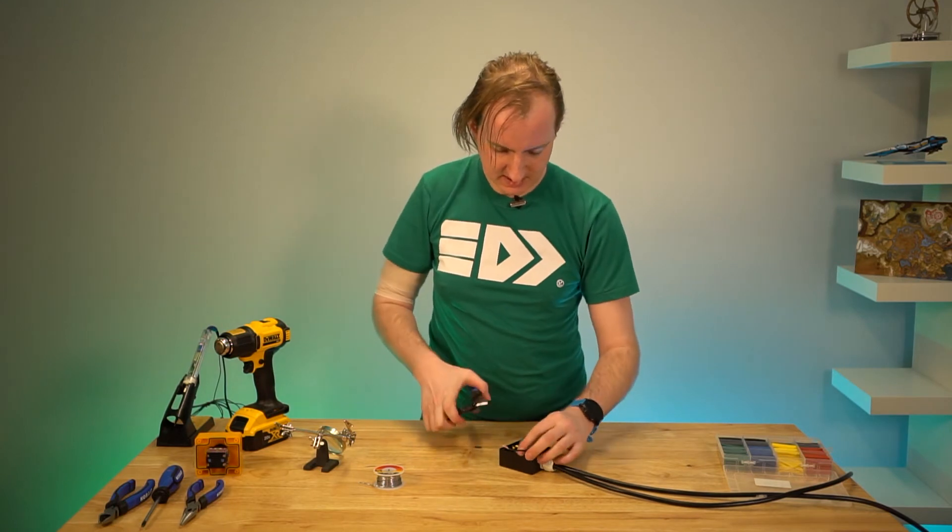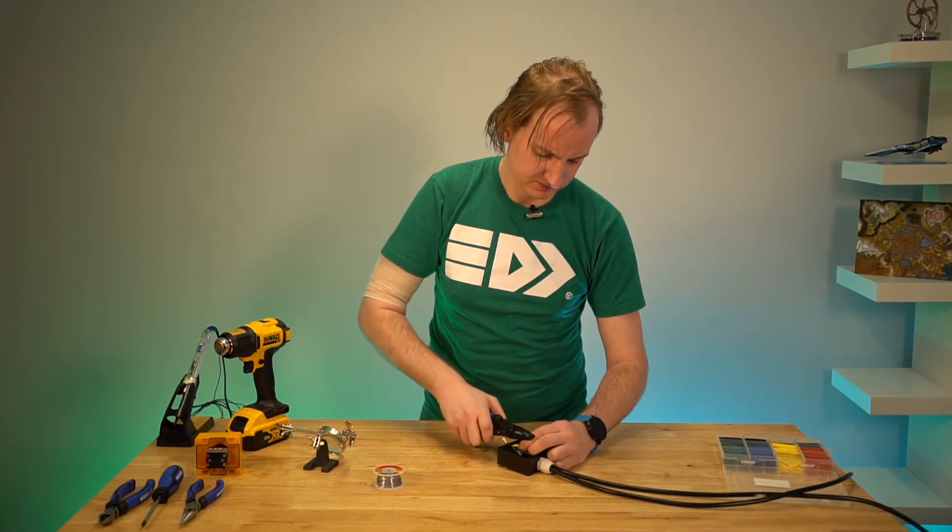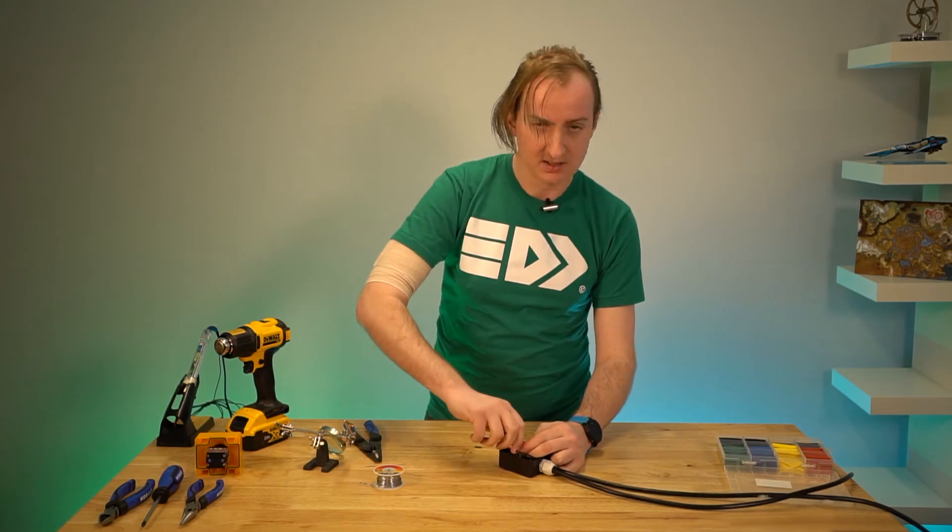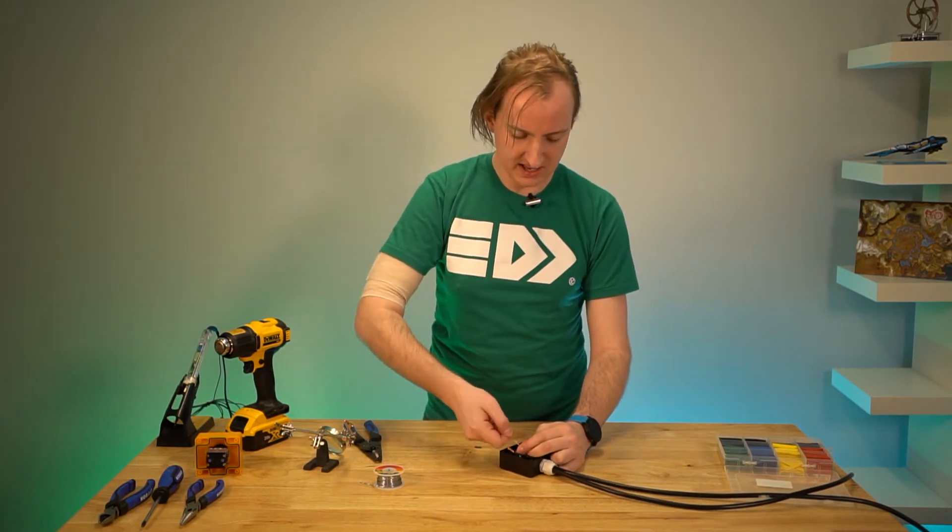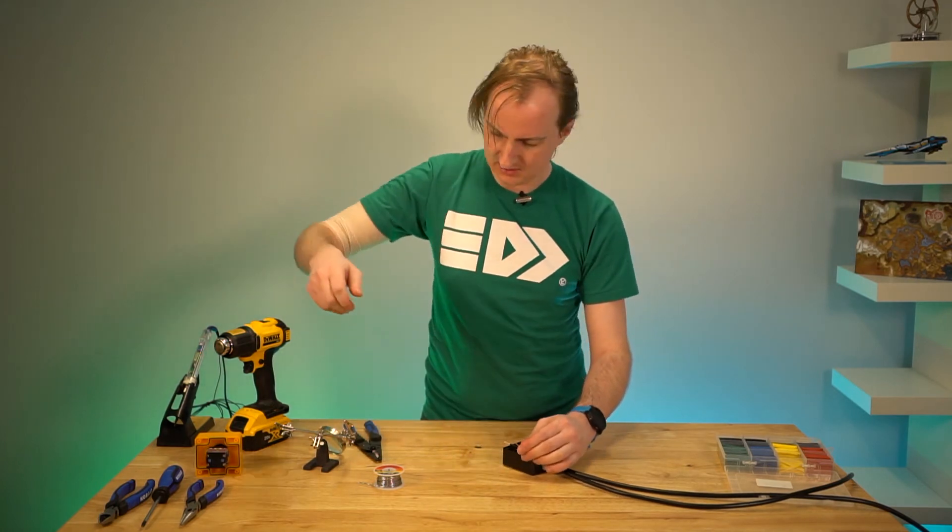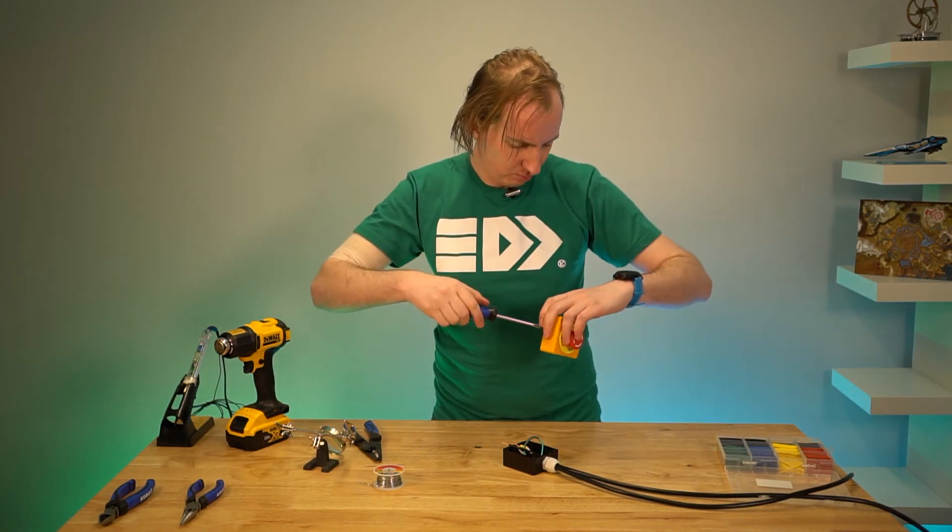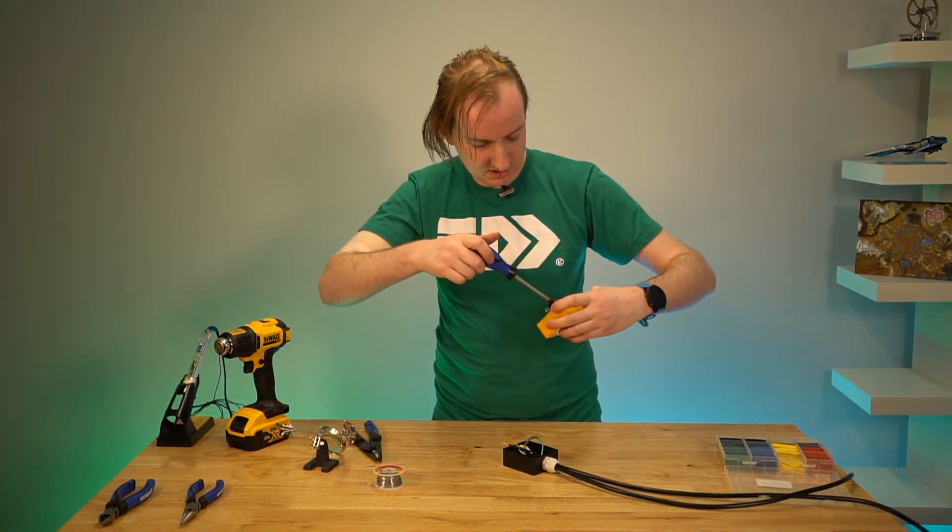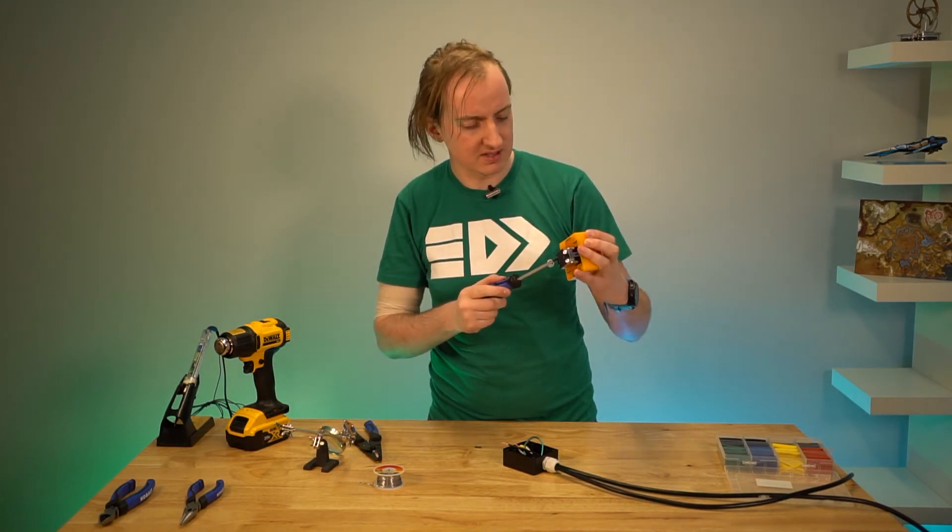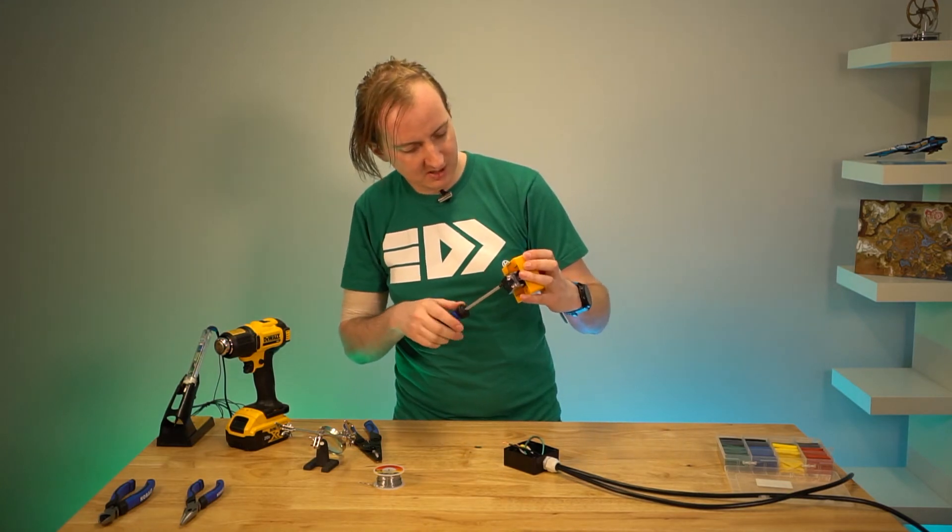So I'm going to twist the ends of the stranded wire together so they're a bit easier to work with. I'm then going to unscrew the one side of my switch, which if you remember earlier we confirmed was the one that closes the circuit and conducts electricity when the switch is pulled up, which is the one we want.